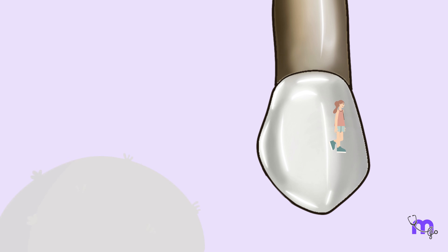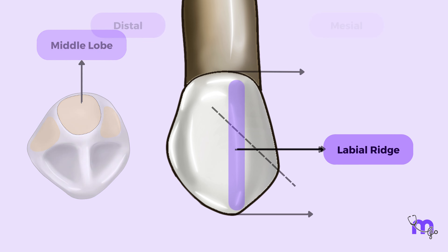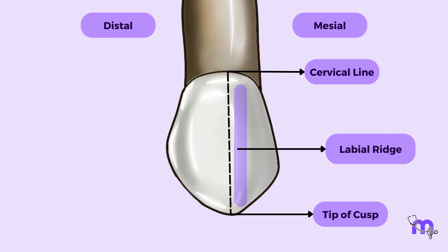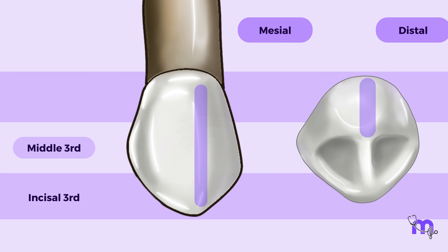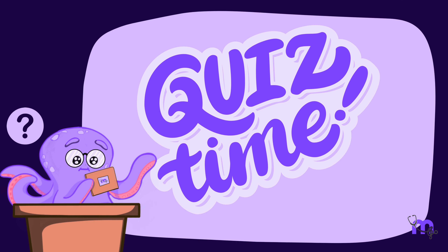Now let's examine the tooth from various aspects to describe its crown morphology. The most prominent component visualized from the labial aspect is the cusp — canines have a sharp, pointed cusp. Let's discuss the outlines first. The cervical outline is curved with the convexity facing the root. From its mesialmost end, the mesial outline follows a straight path or may show a slight concavity until the junction of the middle and incisal thirds, which represents the mesial crest of curvature. From here, the outline transitions into the cusp slope.